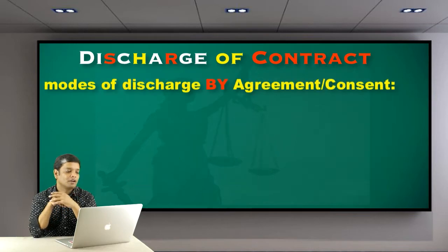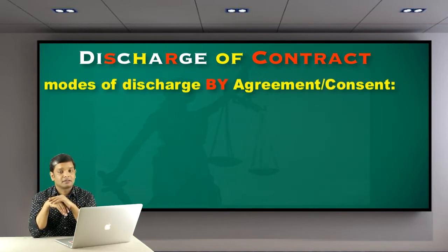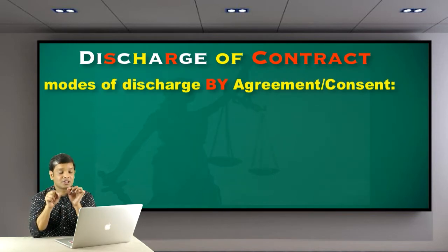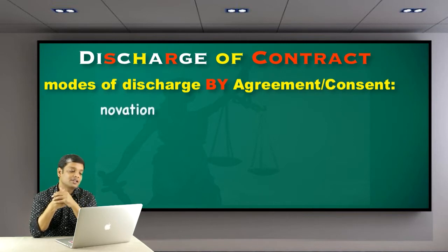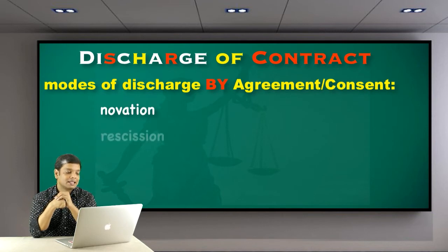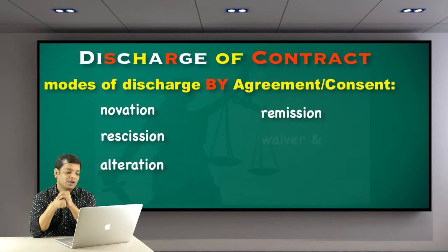There are certain modes to discharge a contract by agreement or consent. Those modes are: novation, rescission, alteration, remission, waiver, and merger.